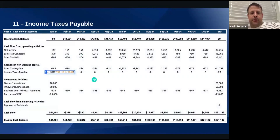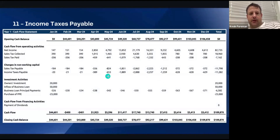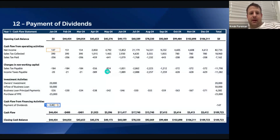Income tax is payable. This is also a product of the income statement — the income taxes being paid out every single month before paying out the company's monthly dividends, which is also coming out of the account. Now, payment of dividends: the number one rule we need to look at when paying out dividends is whatever net income is for a year, you can't pay out a penny more than that. You can only pay out whatever your net income was.